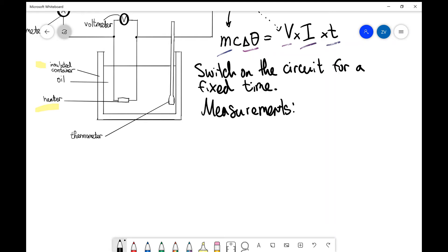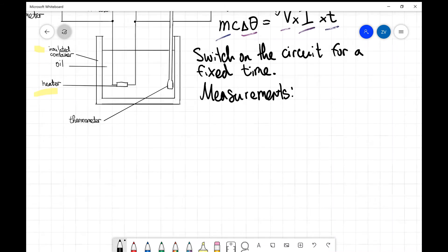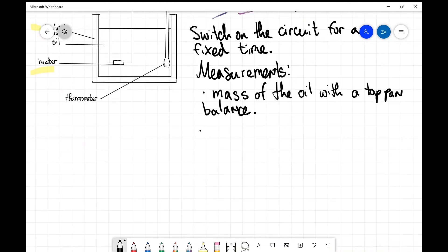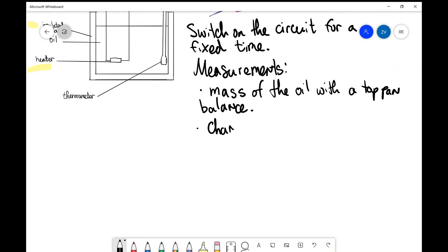Let me just write down measurements. In terms of our measurements, the first thing we need to do is measure the mass of the oil. I'm going to bullet point these: mass of the oil with a top pan balance. Remember the standard way is to measure the mass of the container without the oil inside, then set the top pan balance to zero, and then add in the oil. This should give us the mass of the oil itself. Additionally, we're also going to measure the change in temperature with a thermometer.